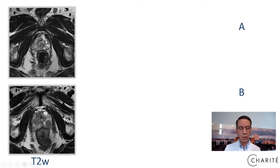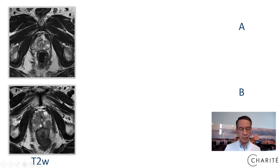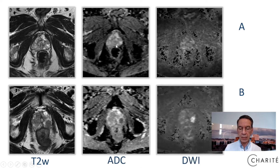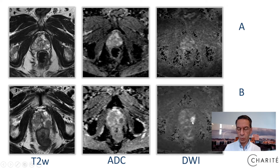In patient A, we see one lesion in the peripheral zone and some linear wedge-shaped changes in the peripheral zone on the right-hand side — looks like chronic prostatitis. Patient B has a focal lesion in the peripheral zone and another even bigger lesion on the right-hand side. Now let us add the diffusion-weighted imaging, the ADC, and the high B-value 1400. This lesion has some diffusion restriction on ADC and high B-value, and this lesion has an even more significant diffusion restriction — the so-called black and white pattern.